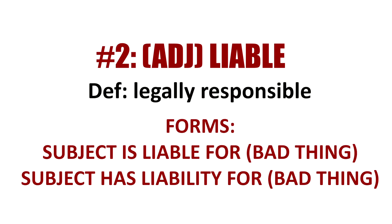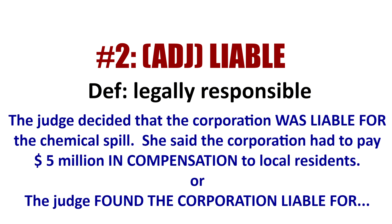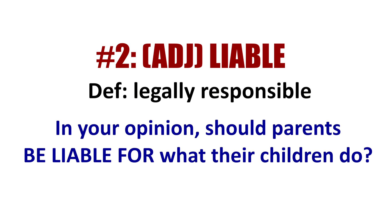The next word is liable, which means legally responsible. The form is: group is liable for bad thing, or group has liability for bad thing. For example, the judge decided that the corporation was liable for the chemical spill and had to pay five million in compensation to local residents. A common question is: should parents be liable if their children commit a crime? Should parents be legally responsible? What do you think?